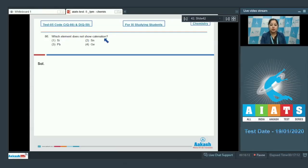Which element does not show catenation? Catenation is the self-linking property which decreases on moving down the group, since the atomic size increases and electronegativity decreases.